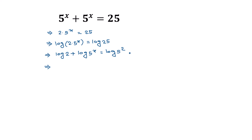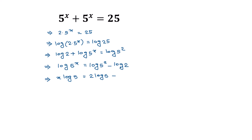Taking log 2 to the right side, we can write log of 5 to the power x is equal to log of 5 squared minus log of 2. Applying the power rule, log(a to the power b) equals b times log(a), we can write x times log 5 is equal to 2 times log 5 minus log 2.